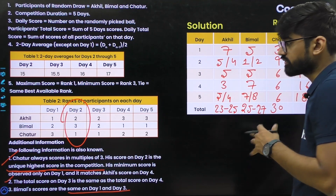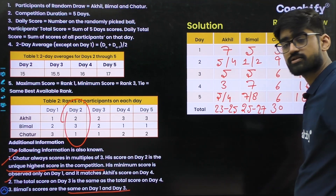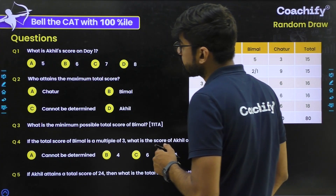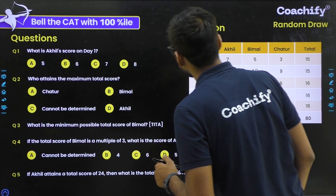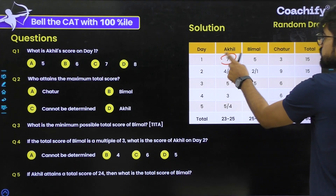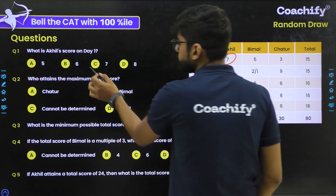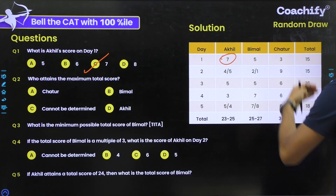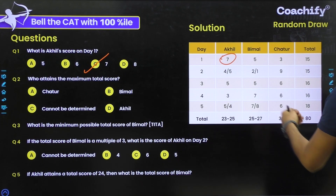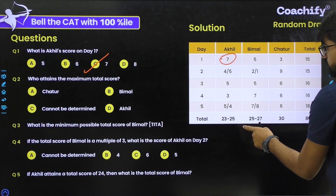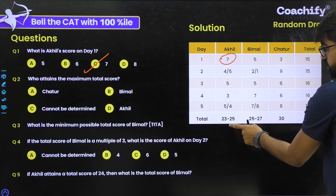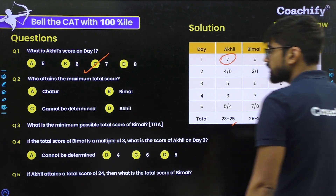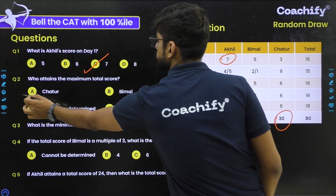Now let's solve the questions. Question 1: What is Akhil's score on day 1? The correct answer is 7, which is option C. Question 2: Who attains the maximum total score? Looking at maximum totals — Akhil's maximum is 25, Bimal's maximum is 27, and Chatur's total is 30 — the correct answer is Chatur.